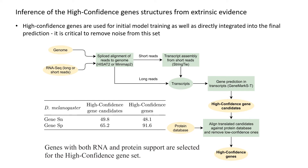The table shows how well this filtering works for fruit fly, one of the tested species. While the raw set of all high-confidence gene candidates contained about one false prediction per every two correct ones, the refined high-confidence gene set is mostly noise-free. As you can see, only a small fraction of correctly predicted gene candidates were lost during the selection.